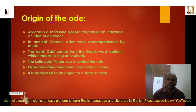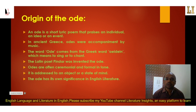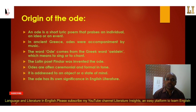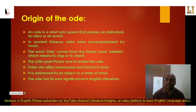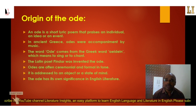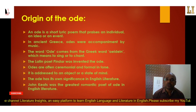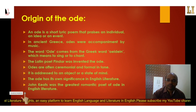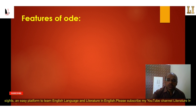The ode is addressed to an object, a state of mind, or something of significance in English literature. The ode originated in Greek and Rome, and later flourished under the influence of English poets during the 17th and 18th centuries, reaching its peak during the 19th century under the Romantic poets. John Keats was the greatest Romantic poet of the ode in English literature.